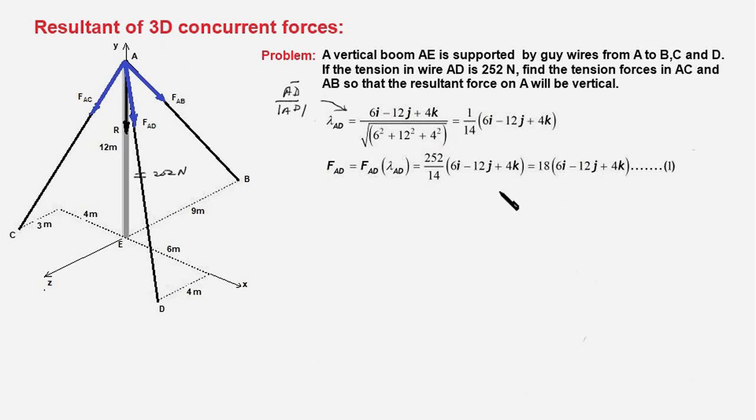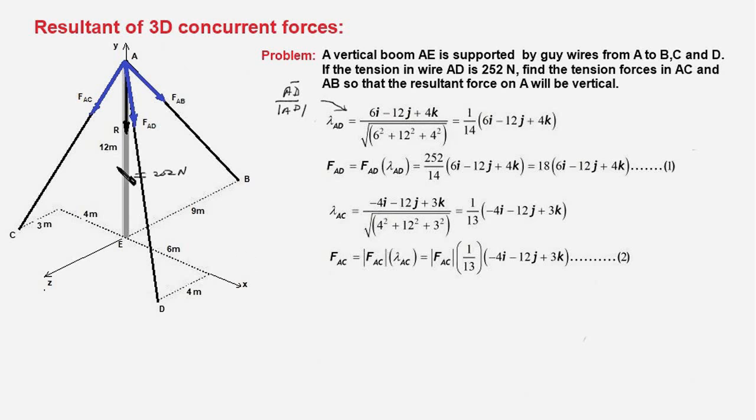A similar exercise we do for forces F_AC and F_AB. The unit vector along AC is the position vector AC divided by the magnitude of the position vector AC, and to find out the position vector we move from A to C.